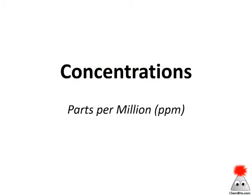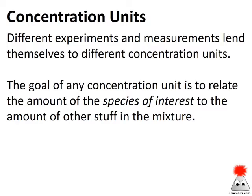Anytime we're dealing with a mixture, it's useful to think about the concentration of different components of that mixture. If we've got very small concentrations, one convenient way to look at those is using the concentration unit parts per million. Depending on the experiment we're doing, different concentration units can be useful. Whenever we're talking about a concentration unit, what we really want to know is some relationship between the species of interest and the rest of the mixture.